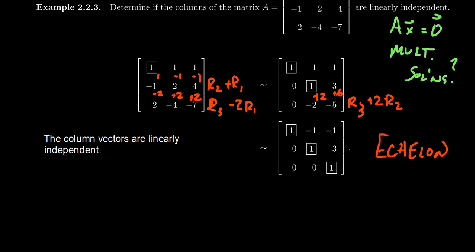If there was a free variable in the system, that is there is a column with no pivot in it, then you can continue to solve the system to determine a dependence relationship. But from echelon form, you can determine whether a set of vectors is linearly independent or linearly dependent.